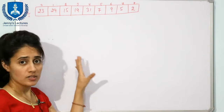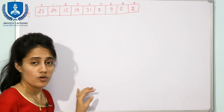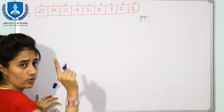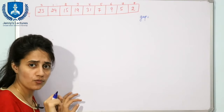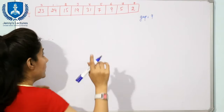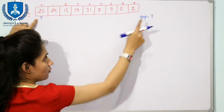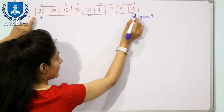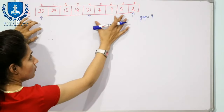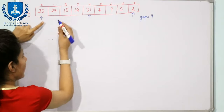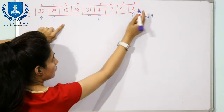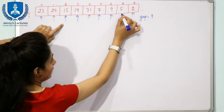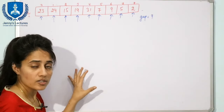Now let's work through an example. The array has n=9 elements, so gap = floor(9/2) = 4. With a gap of 4, we form sublists: elements at indices 0 and 4 form one sublist (23 and 31, and then 2 further along); indices 1 and 5 give (29 and 7); indices 2 and 6 give (15 and 9); indices 3 and 7 give (19 and 5). We compare and sort within these sublists.